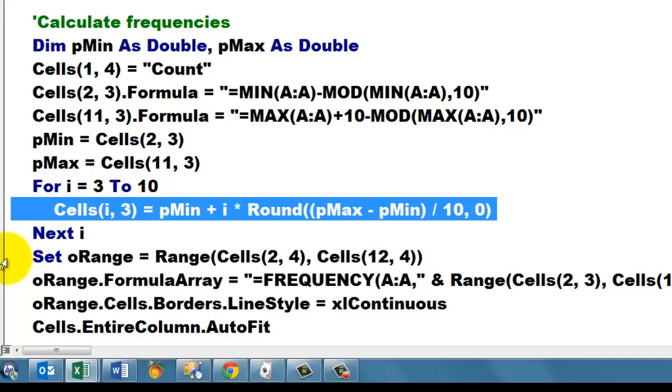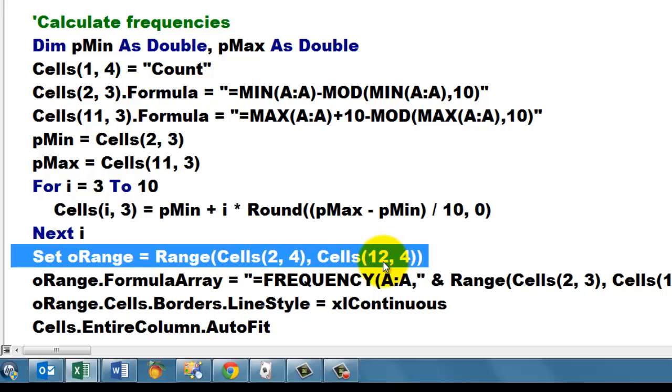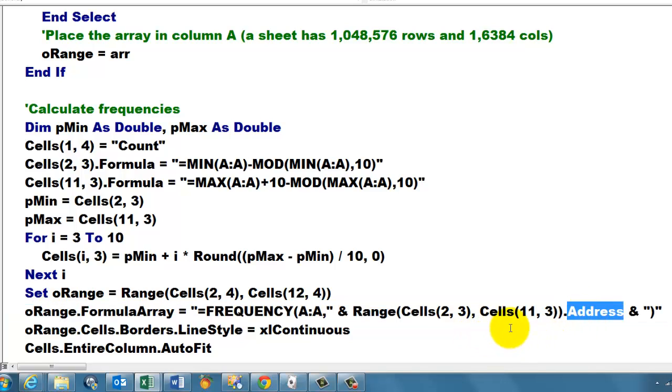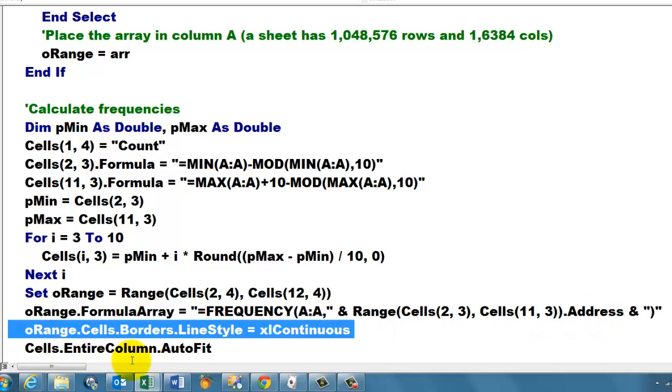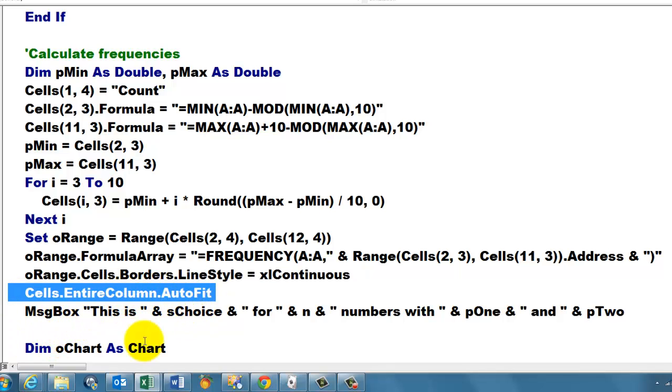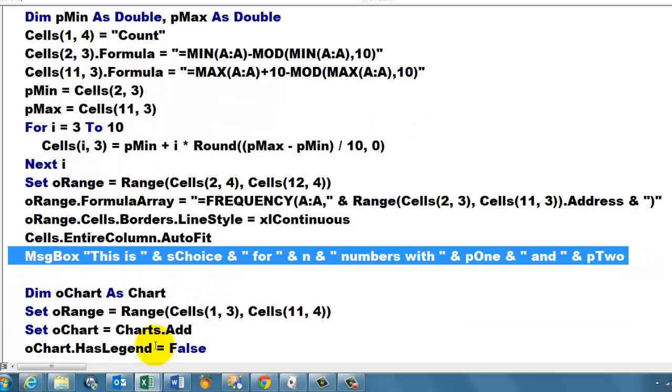Then we set oRange to the cells to the right of the bins with one extra one—remember for the garbage can. So we put an array in there, a formula array based on the frequency function. Frequency is an array function, so we have to use FormulaArray. And it runs from second row in column 3 through the eleventh row in column 3, and take the address of that range—so those are the bins. Then we make the borders around it. That is just some cosmetic work. Make sure that all the cells, the columns of it, autofit. Then we tell the user what the outcome is.